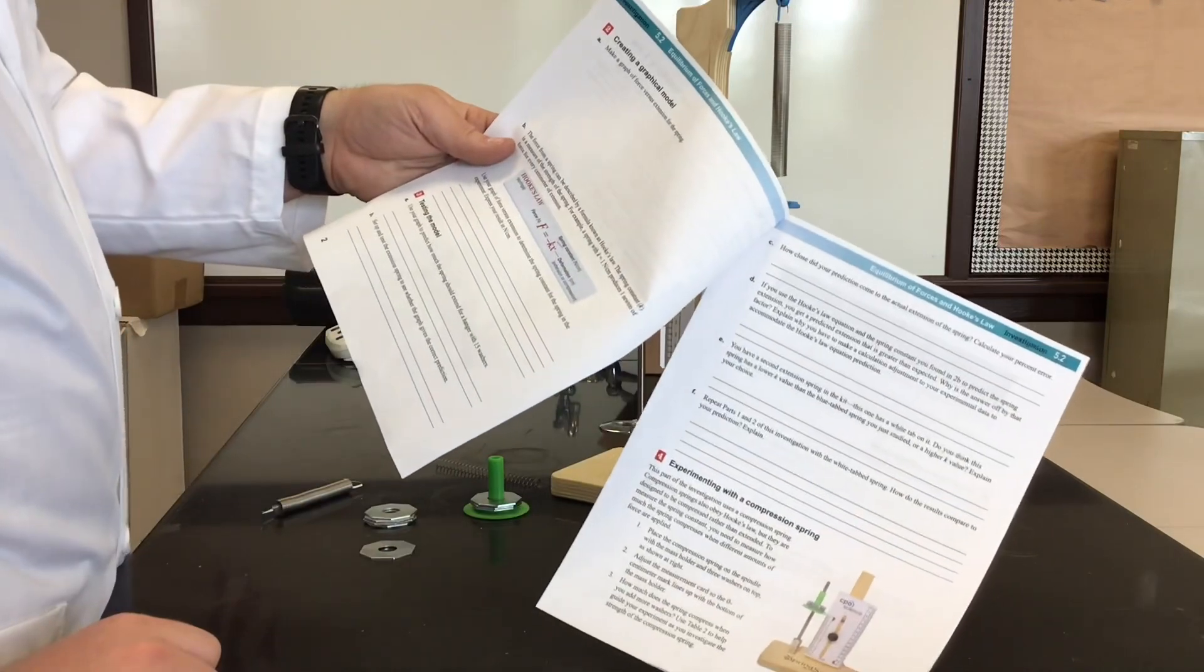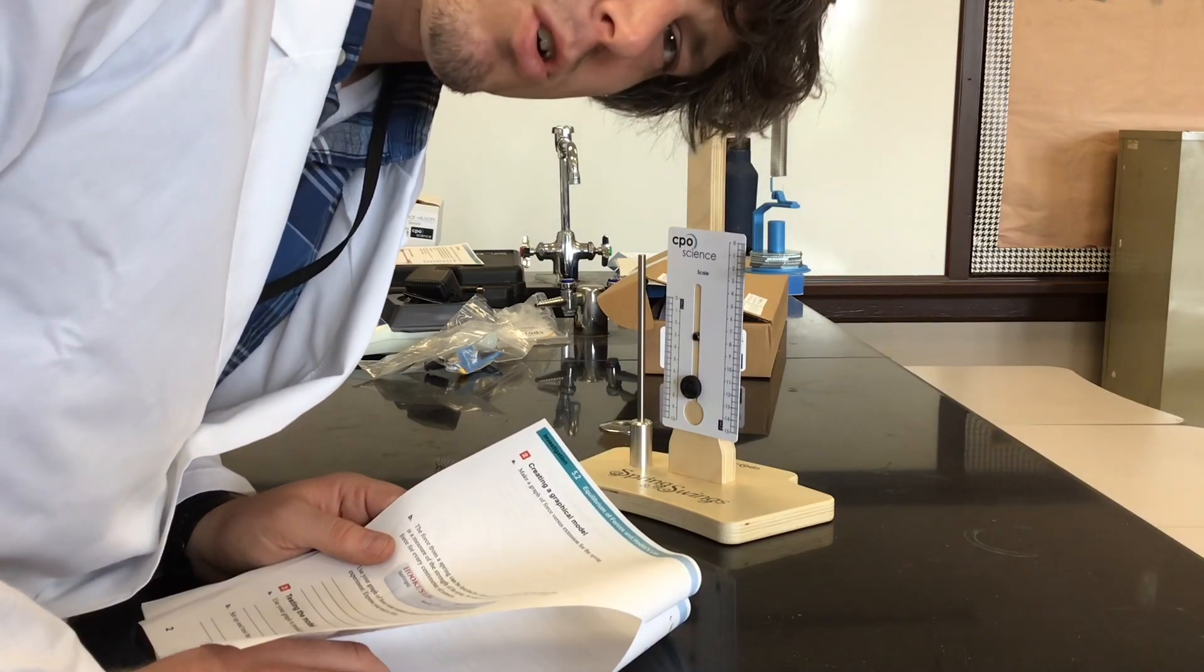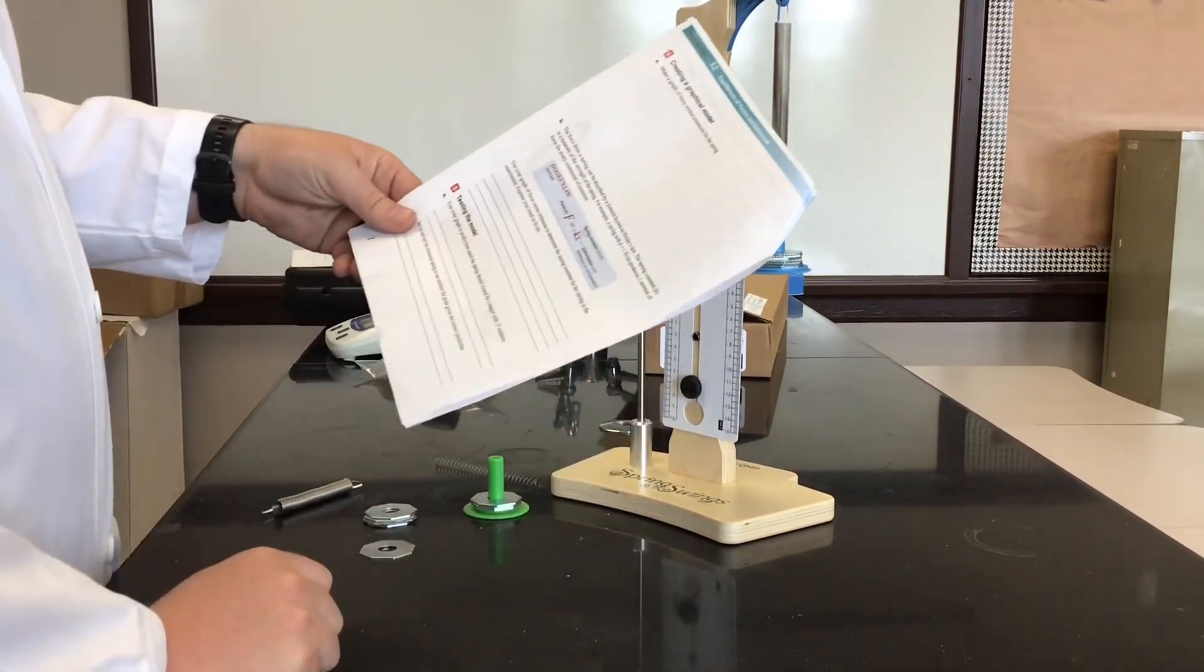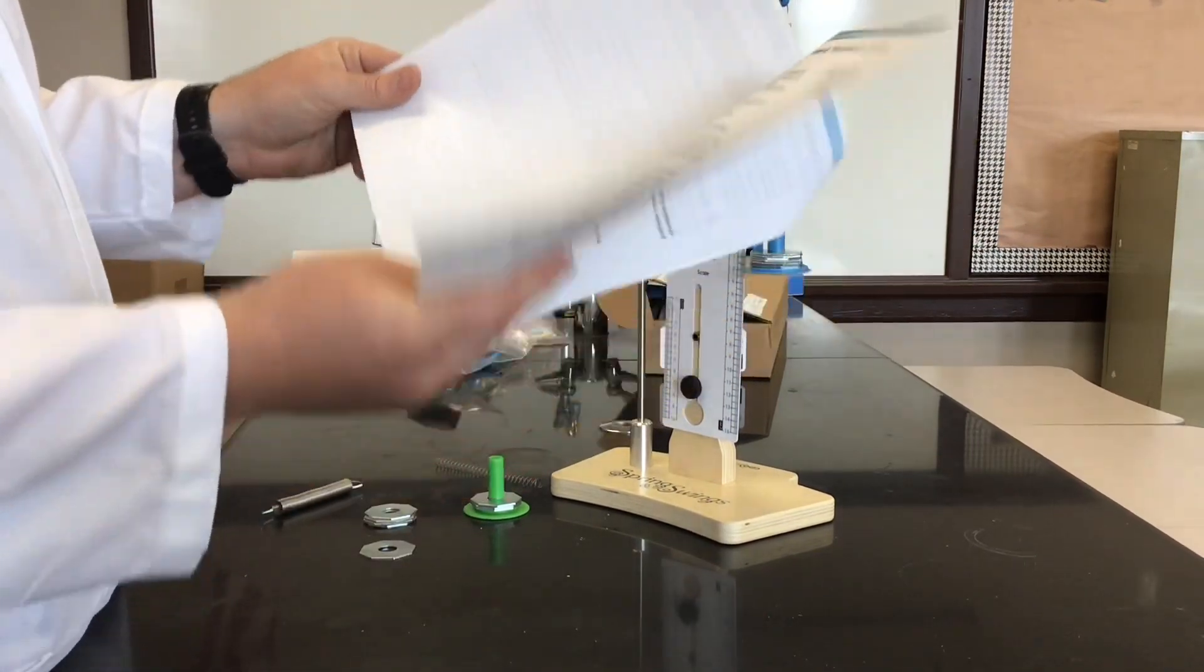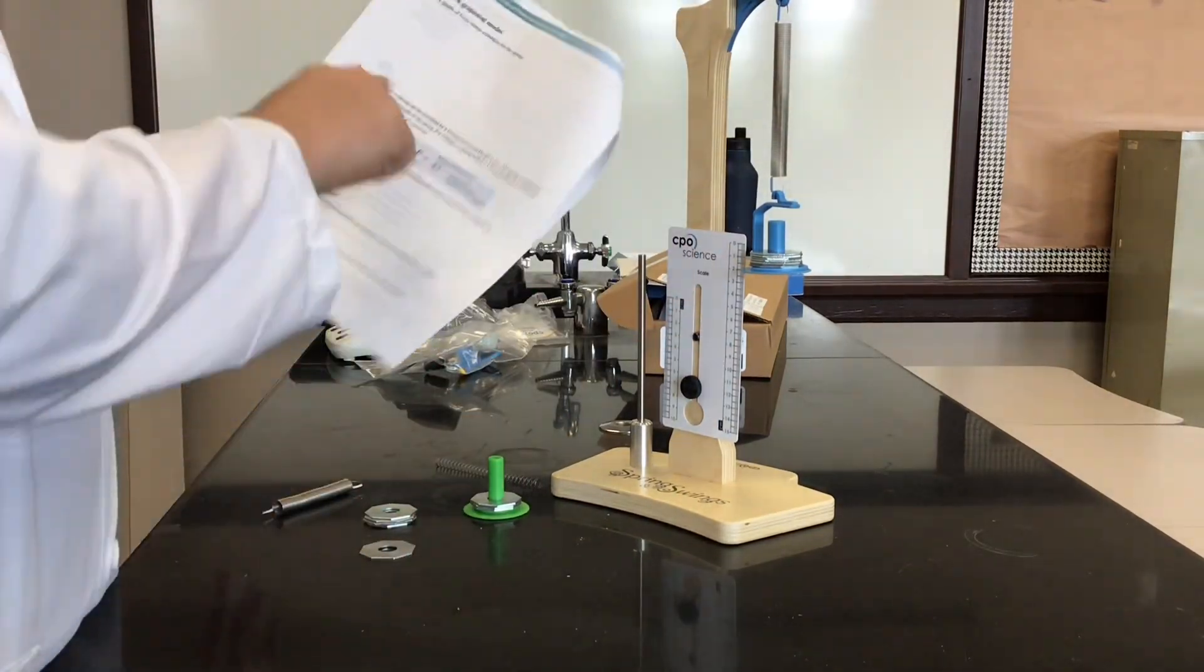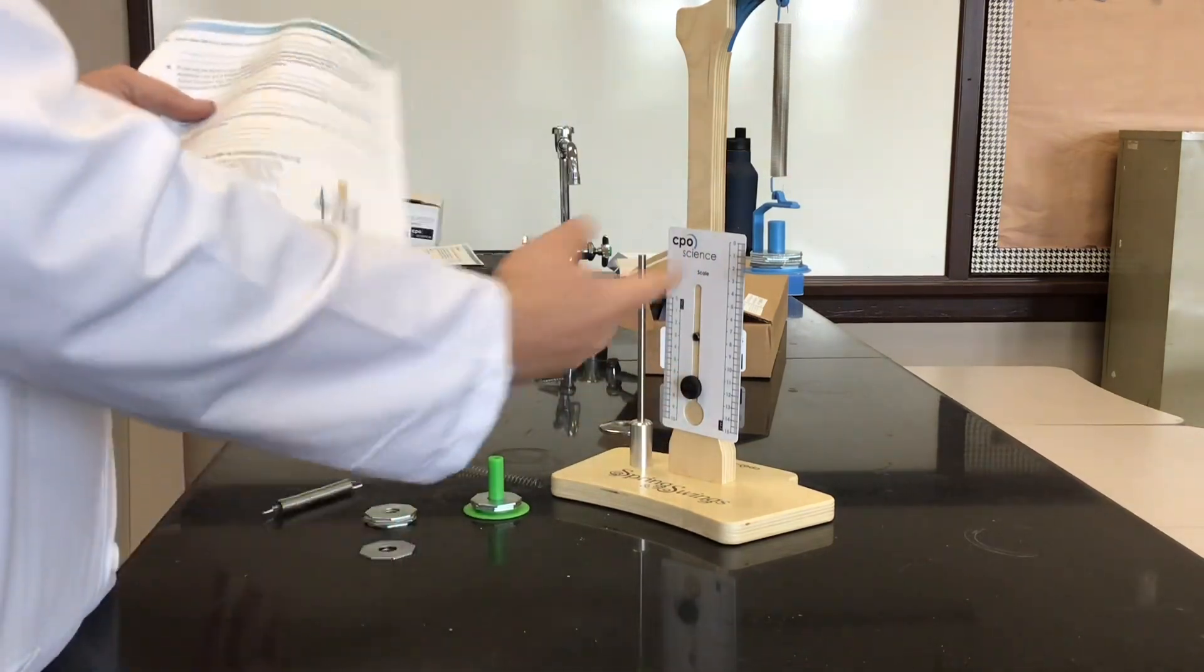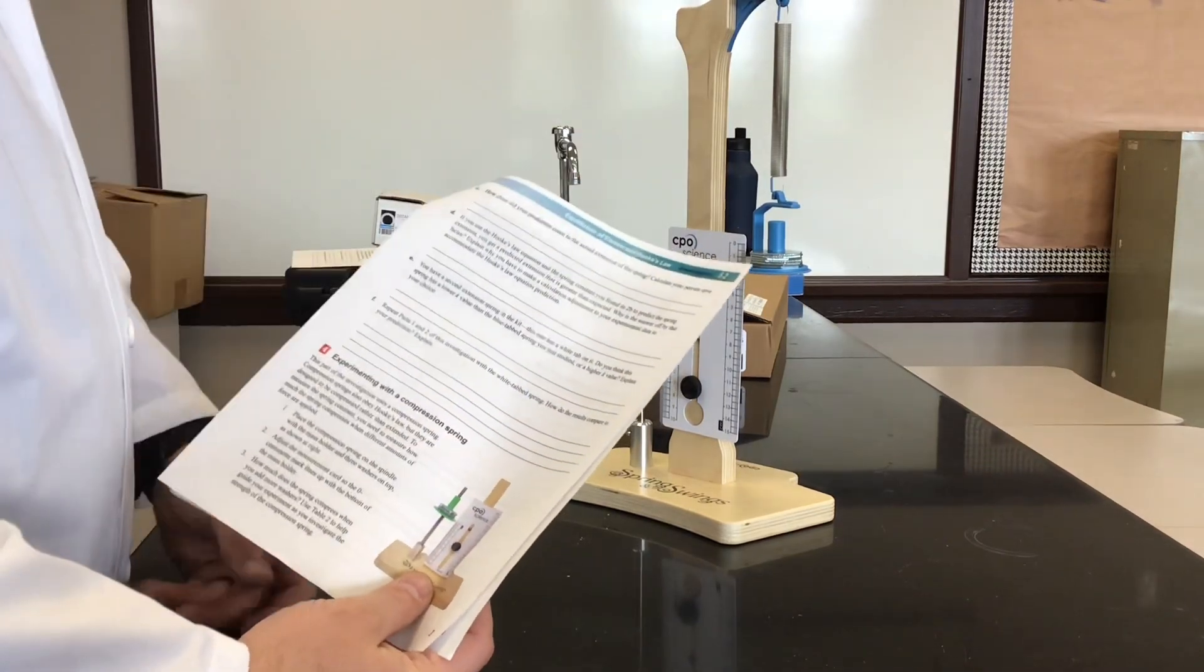All right, so then they're going to make a prediction using their model. They're going to say, okay, well you've done that for up to 11 washers, make a prediction if you added a total of 15 washers. Looking at your scale, projecting out using the spring scale constant that you calculated, what do you think the change in distance would be? And then they can add up to the 15 and actually see how accurate were they. Answer some questions.